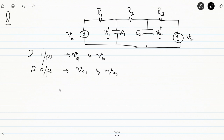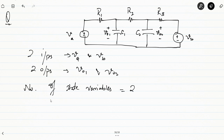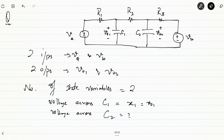The state variables in any electrical circuit are represented by the number of energy storage elements. Here we have C1 and C2, so the number of state variables is two. The state variables are X1, the voltage across capacitor C1 (which is V01), and X2, the voltage across C2 (which is V02).